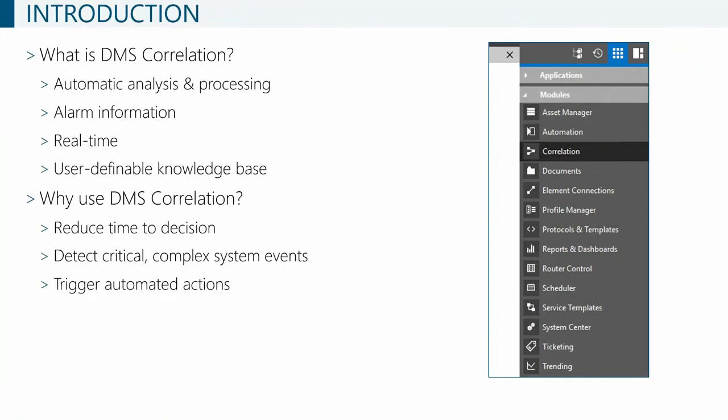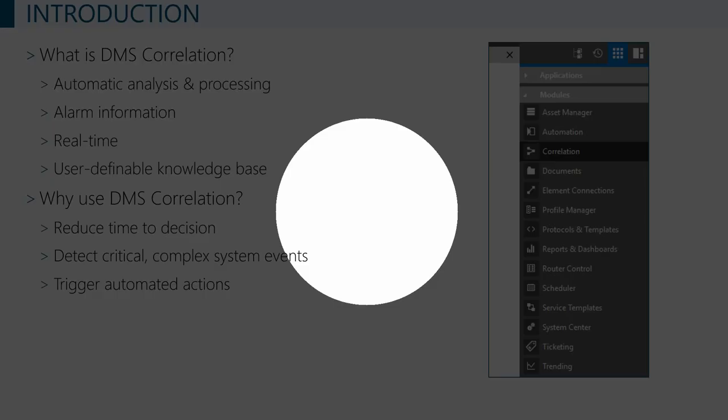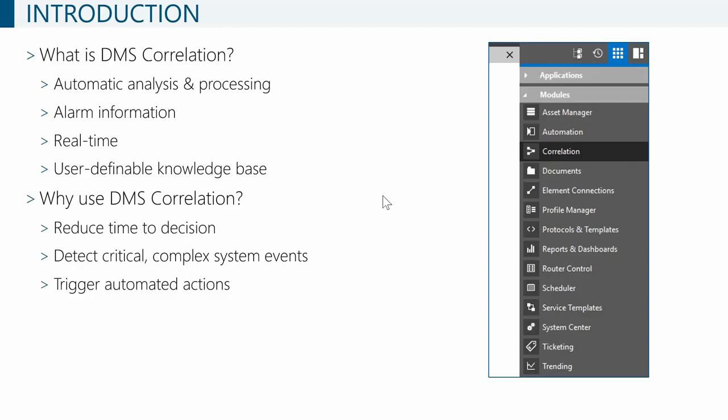Where is correlation located? You will find it in the apps — in the surveyor on the apps tab page. You have the automation and correlation section there on the right-hand side.